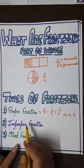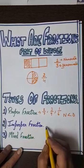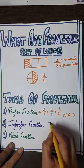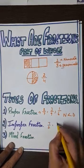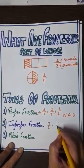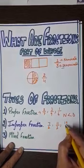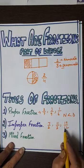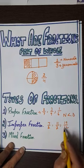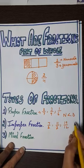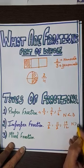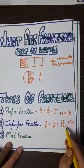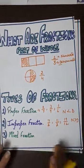Next is improper fraction, which is the opposite of proper fraction. For example, fractions like 7 by 2, 11 by 2, or 19 by 12 — in each of these, you observe that the numerator is greater than the denominator. That is why they are called improper fractions.